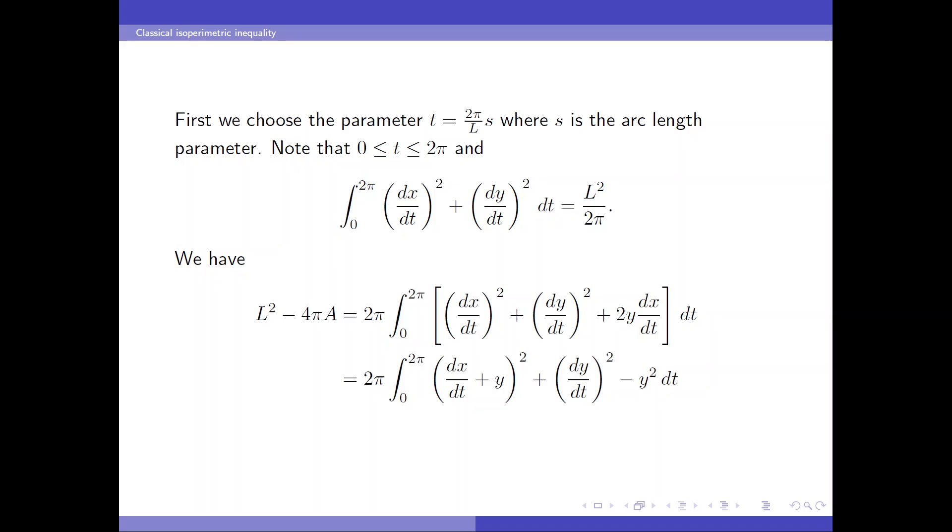Therefore, L squared minus 4 pi a equals this integral. And we can complete the square to get the integral is dx/dt plus y squared plus the additional terms. Therefore, to establish the isoperimetric inequality, we just have to show that the last two terms are non-negative.